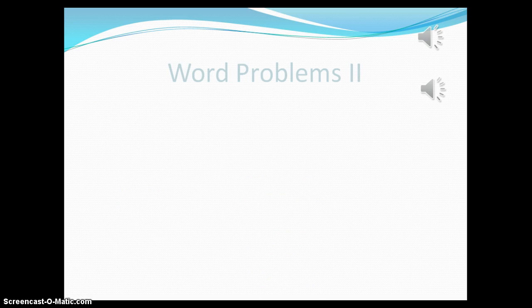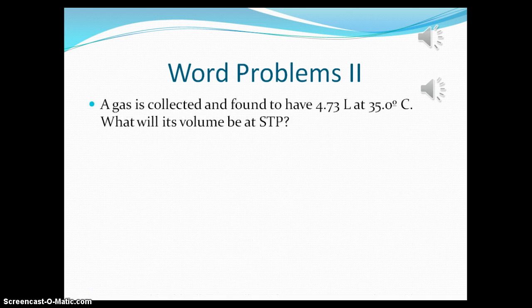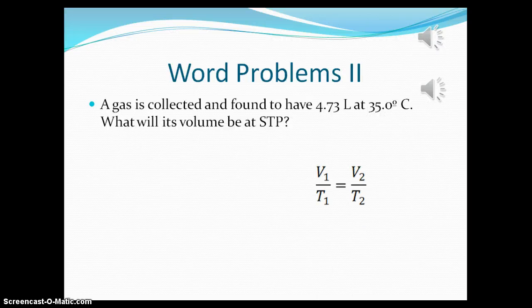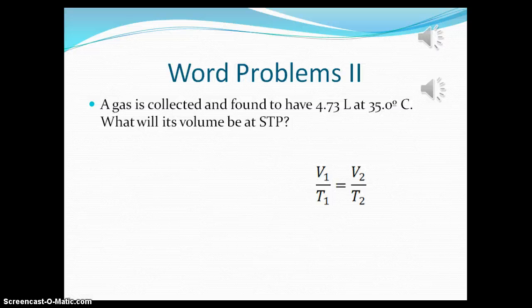Here's another word problem. A gas is collected and found to have 4.73 liters at 35.0 degrees Celsius. What will its volume be at STP? First, we got to realize that this is a Charles' Law problem, and so we need V1 divided by T1 equals V2 divided by T2.